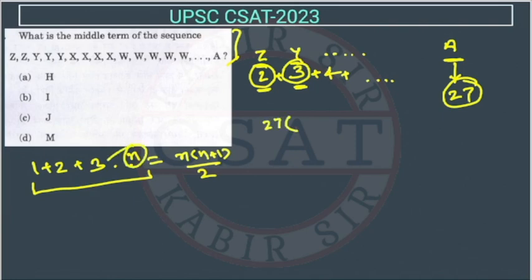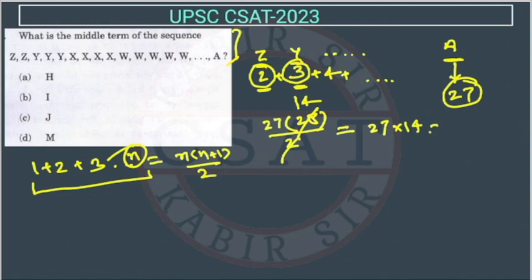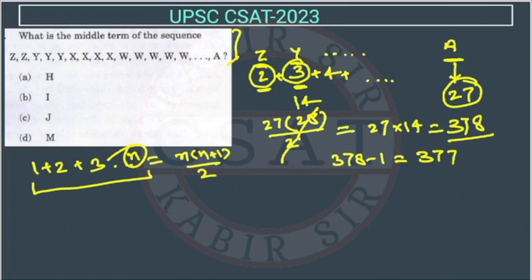There are n = 27 terms, so this will be 27 × 28 / 2, which gives 27 × 14. That is 378. But we already assumed 1 extra, so we subtract 1. The total number of letters is 378 minus 1, which equals 377.